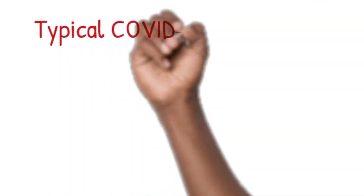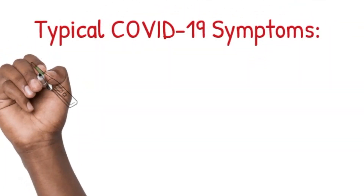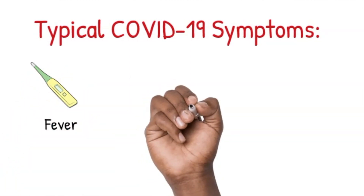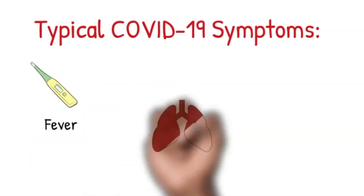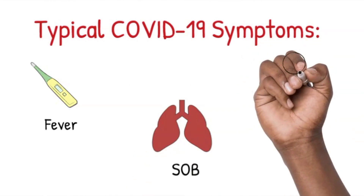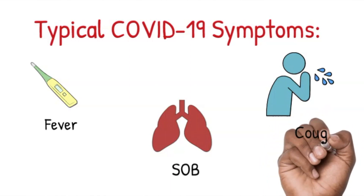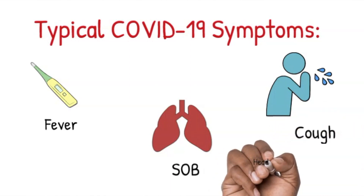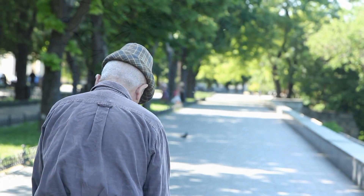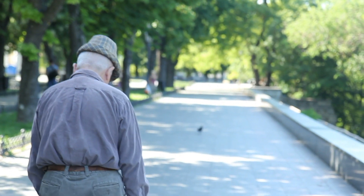In all adults, the presentation can be quite different. Usually the typical symptoms for COVID-19 that you've read about or seen in different media outlets would be fever, shortness of breath, and dry cough. It can also include other symptoms such as headache, sore throat, or muscle pains. These are the typical presentations of COVID-19.